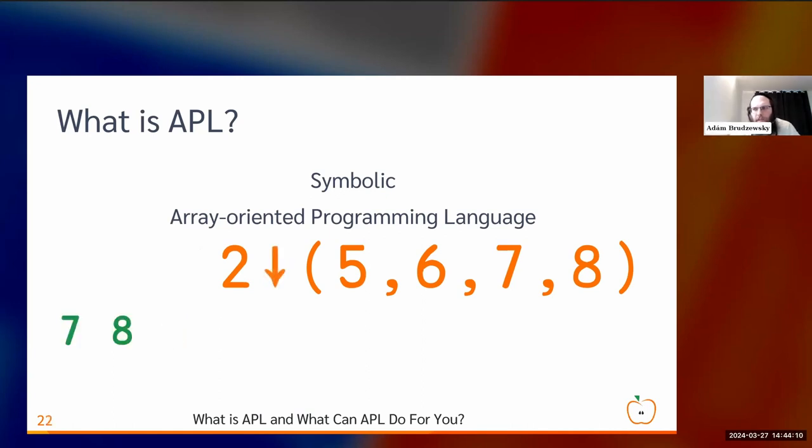Then we had that down arrow to mean drop. It takes away the leading elements. The up arrow, then by analogy, takes leading elements and keeps them and discards everything else.